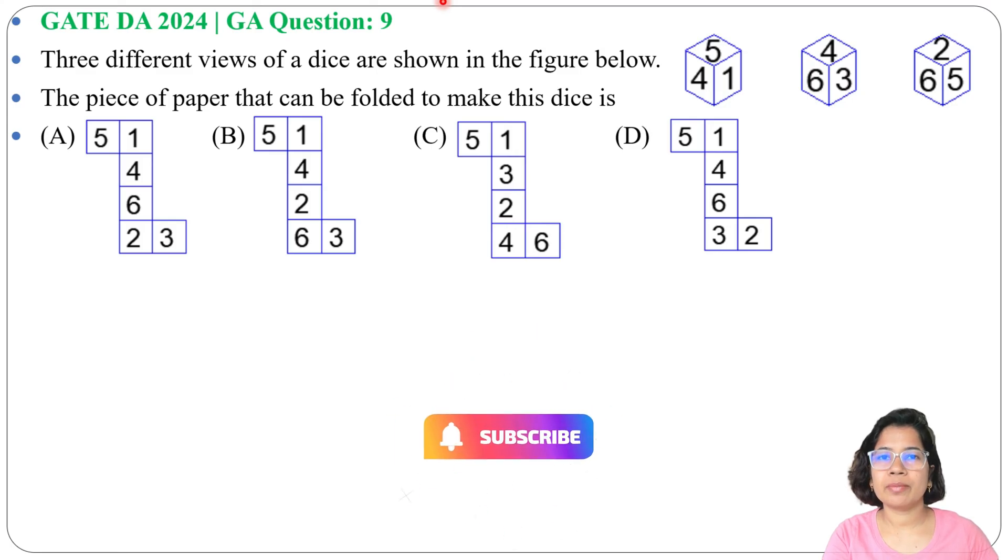Let's solve one previous question of general aptitude. This question was asked in GATE DA 2024, GA question number 9. Three different views of a dice are shown in the figure below. These are the three different views of a dice. The piece of paper that can be folded to make this dice and four options are given.